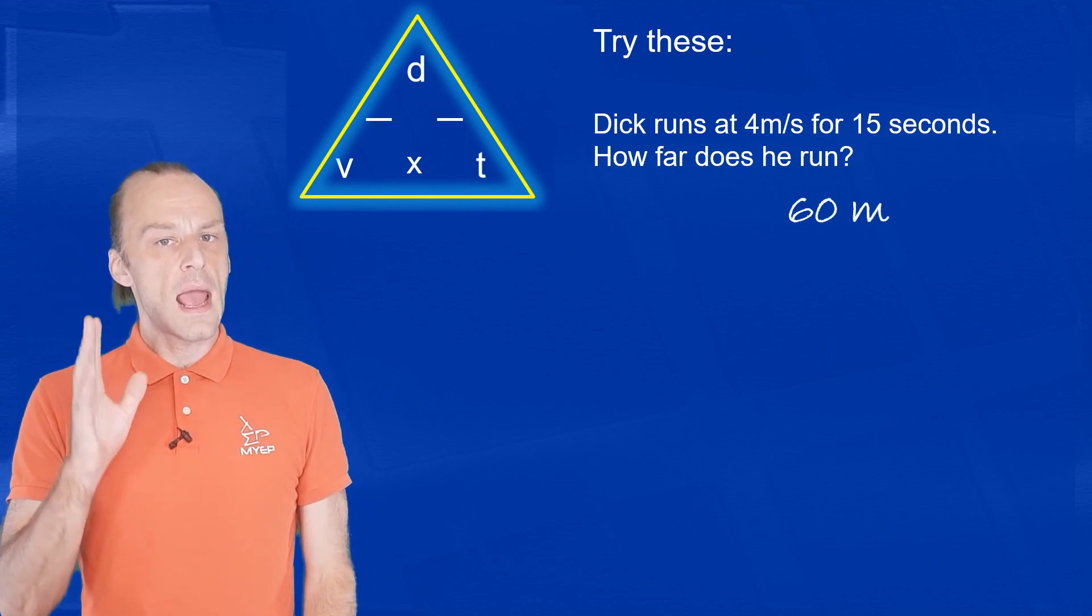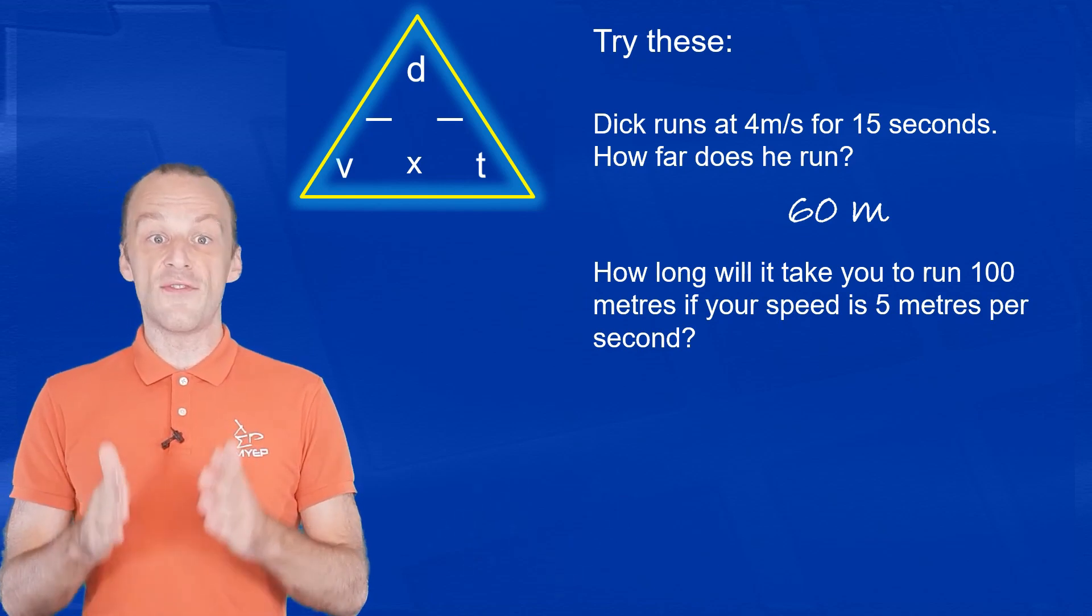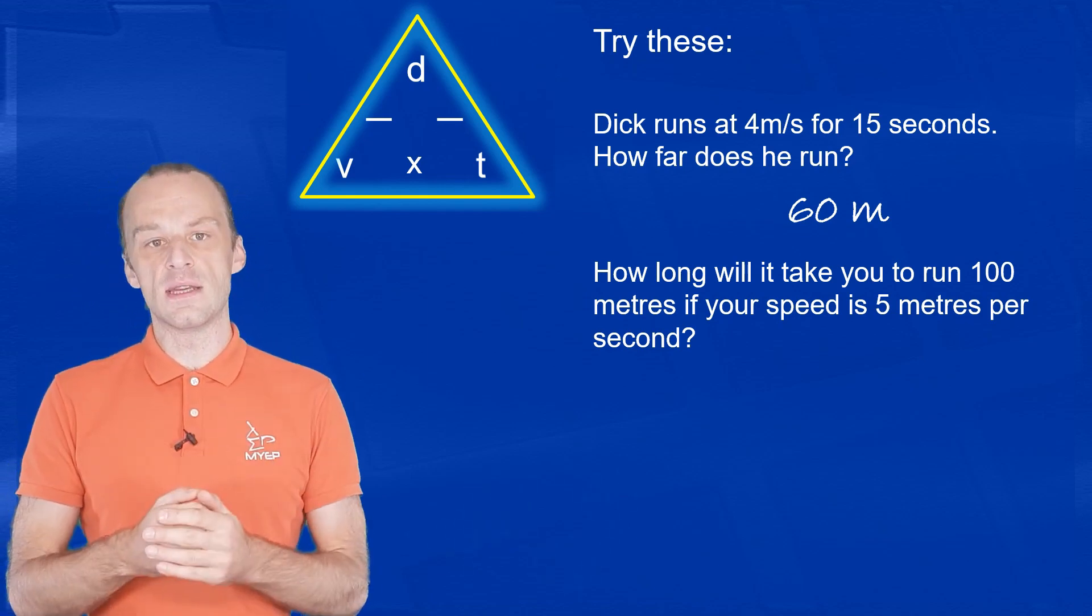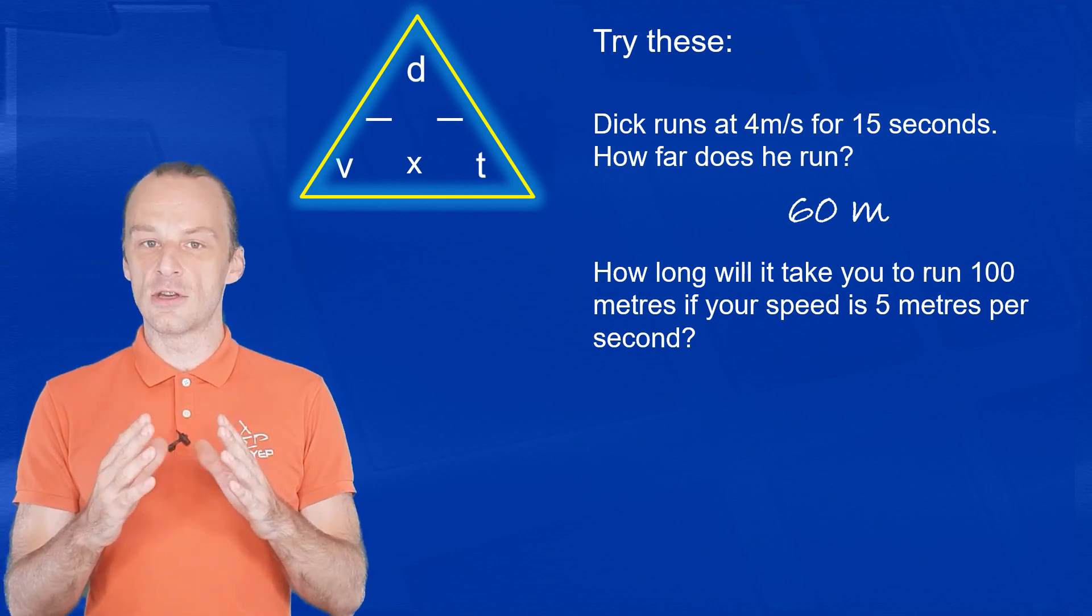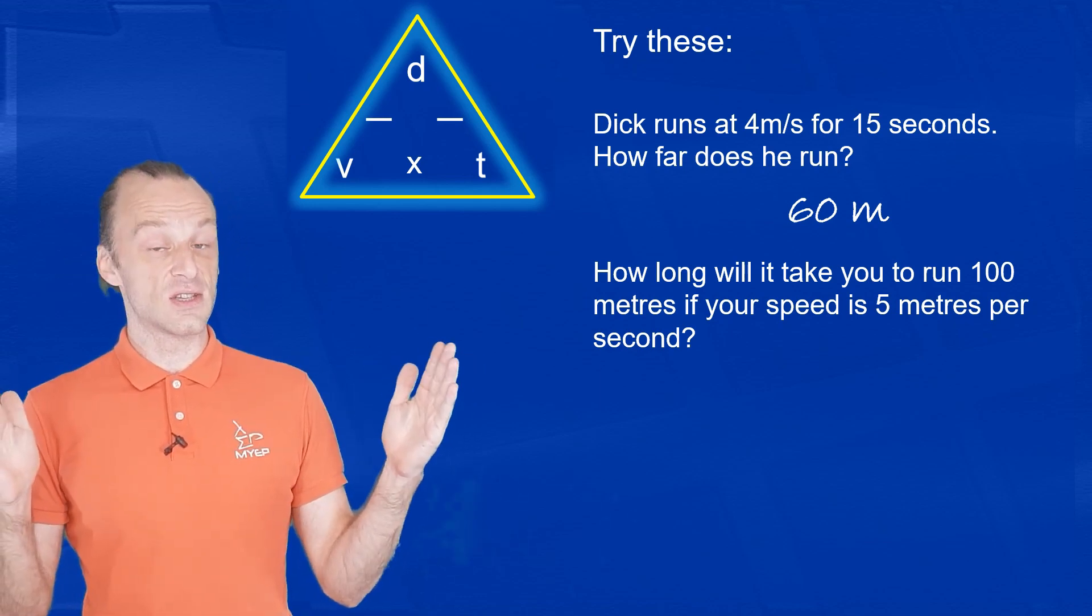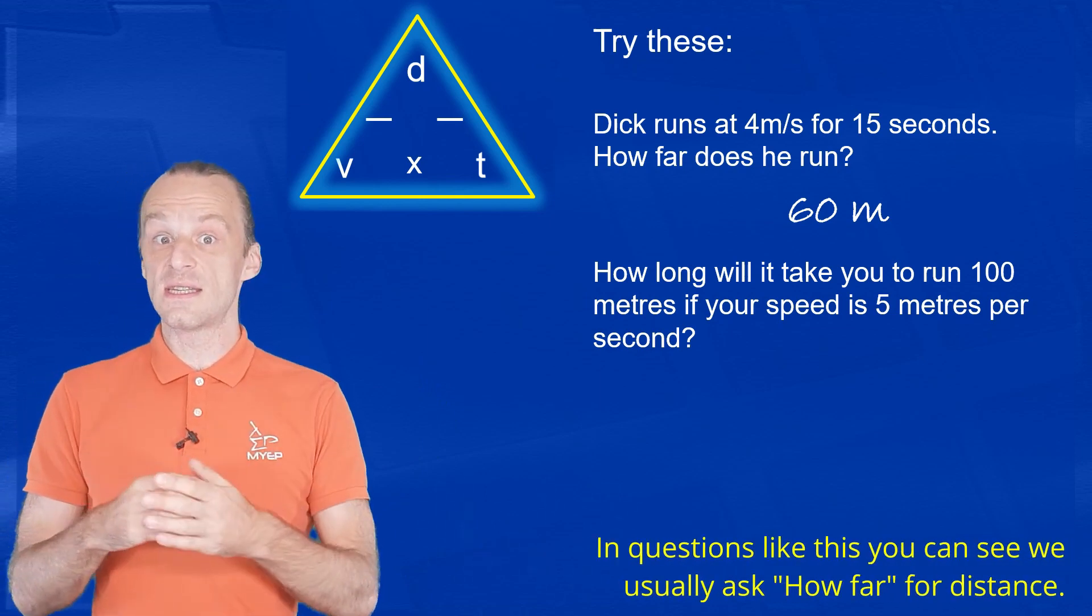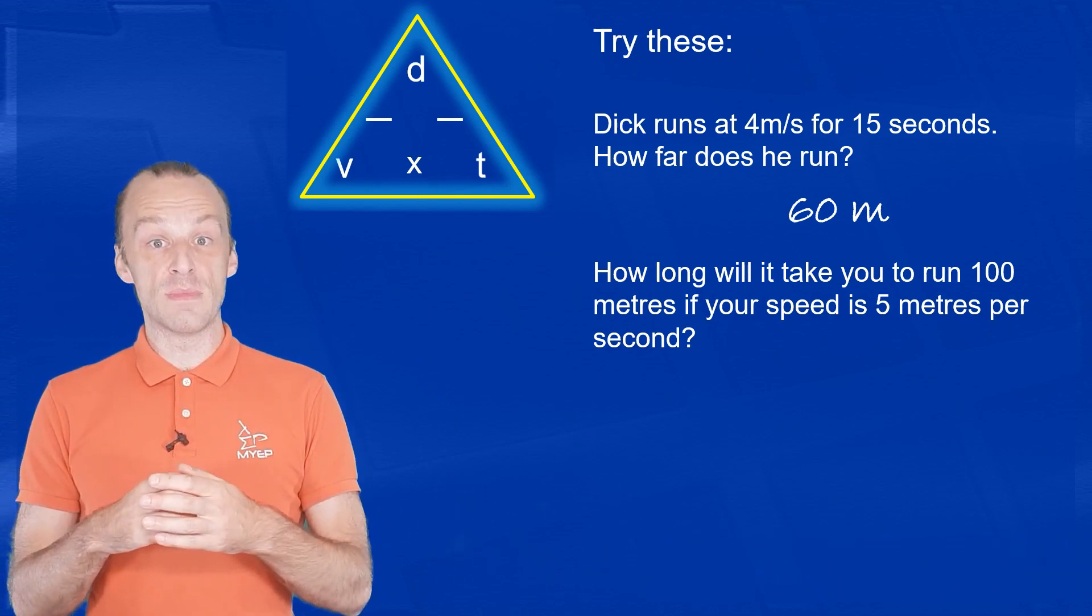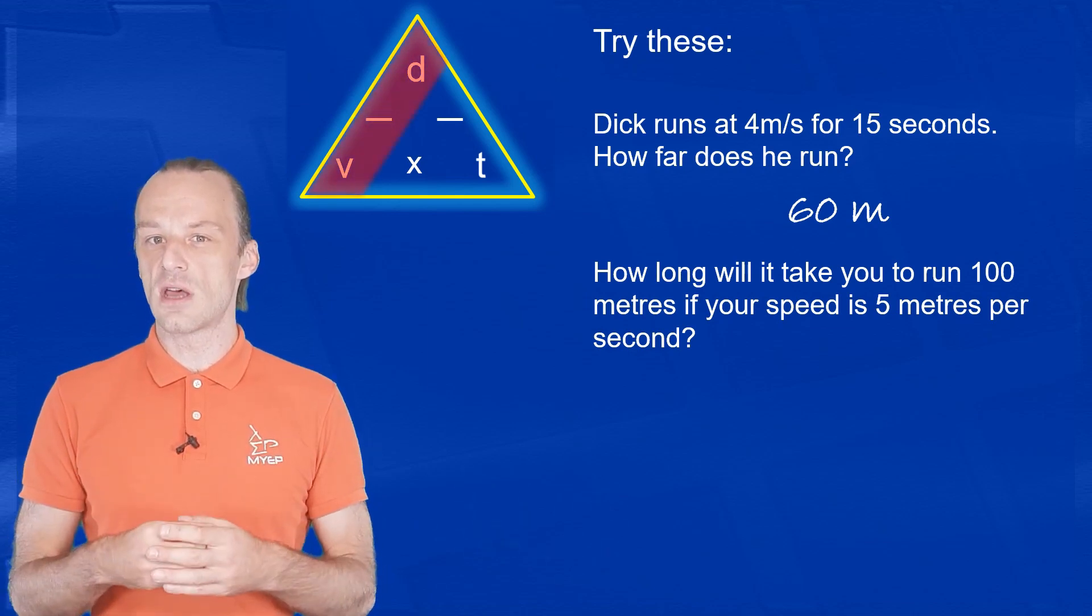Try another one. How long will it take you to run 100 meters if your speed is 5 meters per second? How long can be confusing because it could be how long in distance or how long in time. But we can see that we are running 100 meters. We already have the distance, so we're trying to work out time.